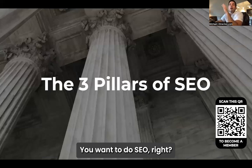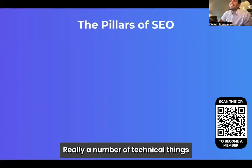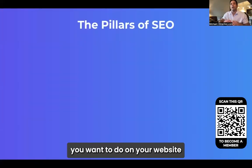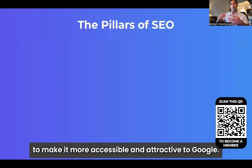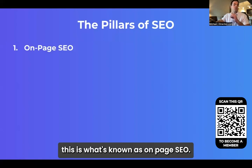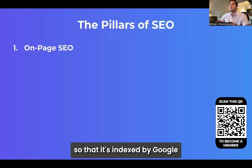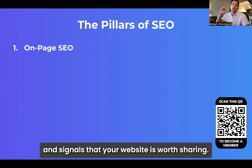To do SEO right, there are a number of technical things you want to do on your website to make it more accessible and attractive to Google. These are known as on-page SEO — making adjustments to your website so that it's indexable by Google and signals that your website is worth sharing.